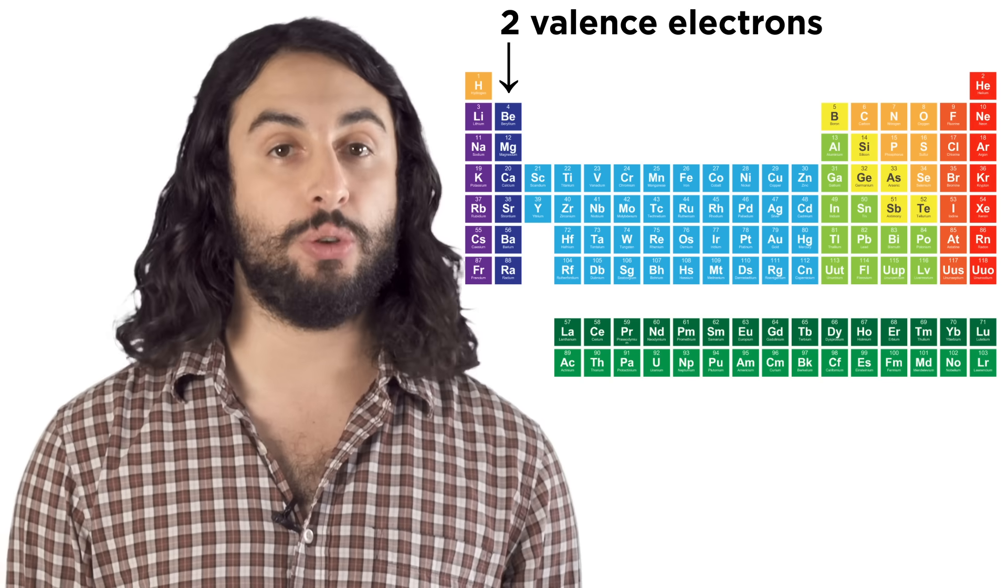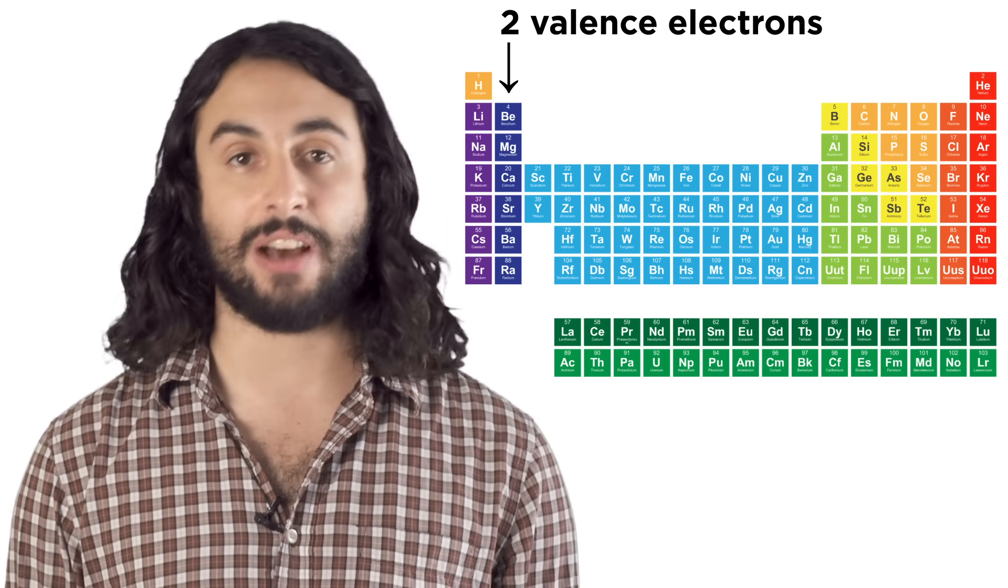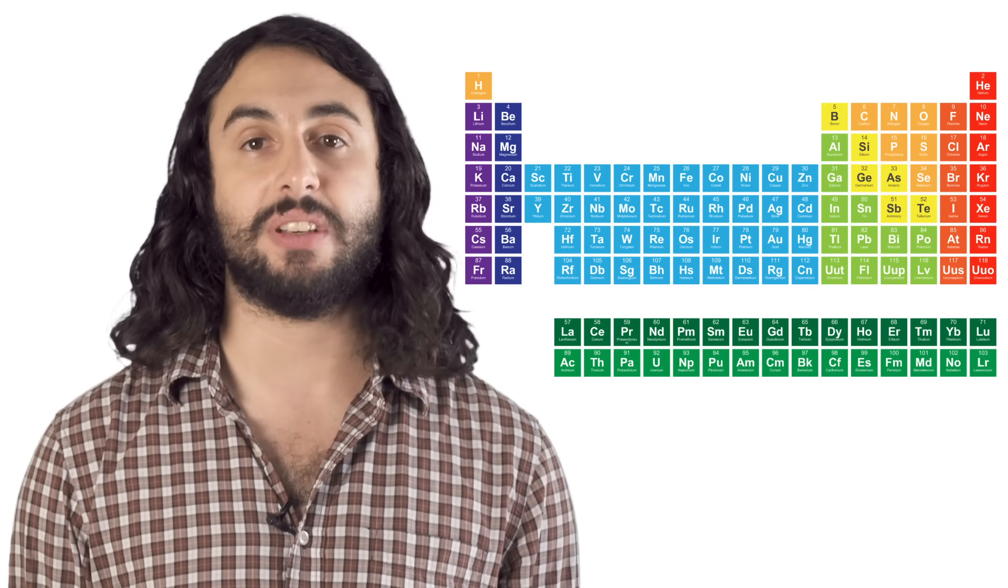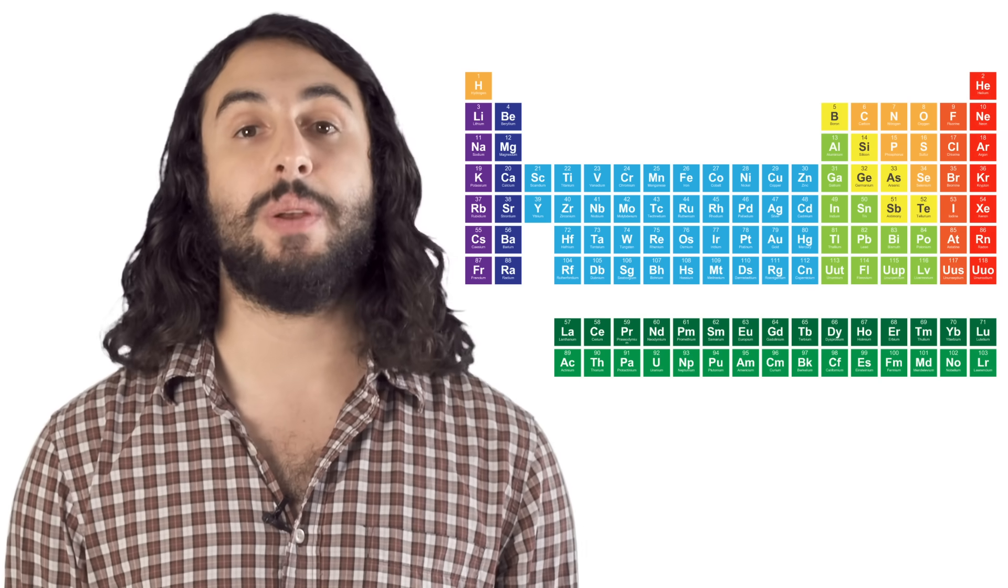Every element in group two has two electrons in its outermost shell, and so forth. This simple fact determines many characteristics about each element in ways we will continue to see as we learn more chemistry.